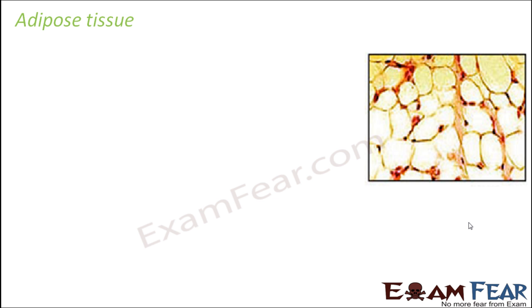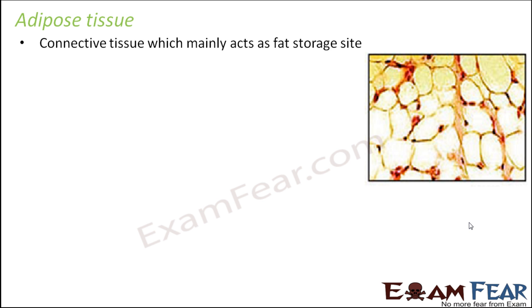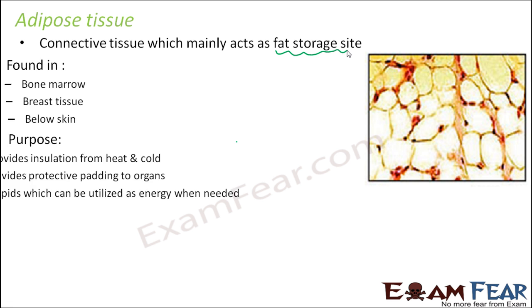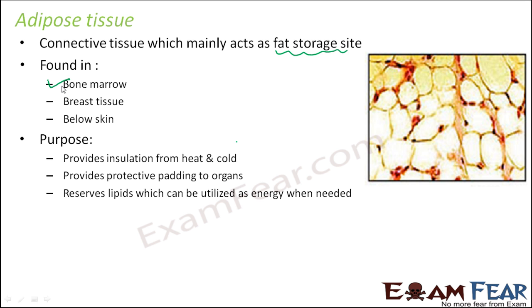The last type of connective tissue is adipose tissue. It is a connective tissue which mainly acts as a fat storage site. Too much increase in adipose tissue causes obesity and increase in weight because too much fat gets accumulated. It is found in bone marrow, breast tissue, and below the skin. Its purpose is to provide insulation from heat and cold, provide protective padding to organs, and reserve lipids which can be utilized as energy later.